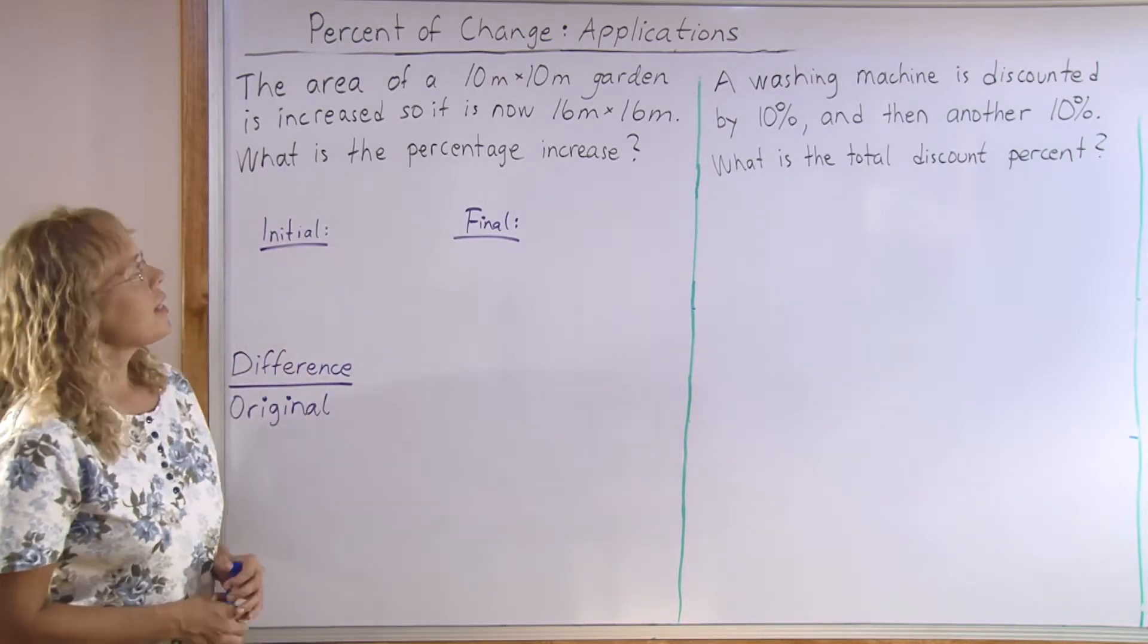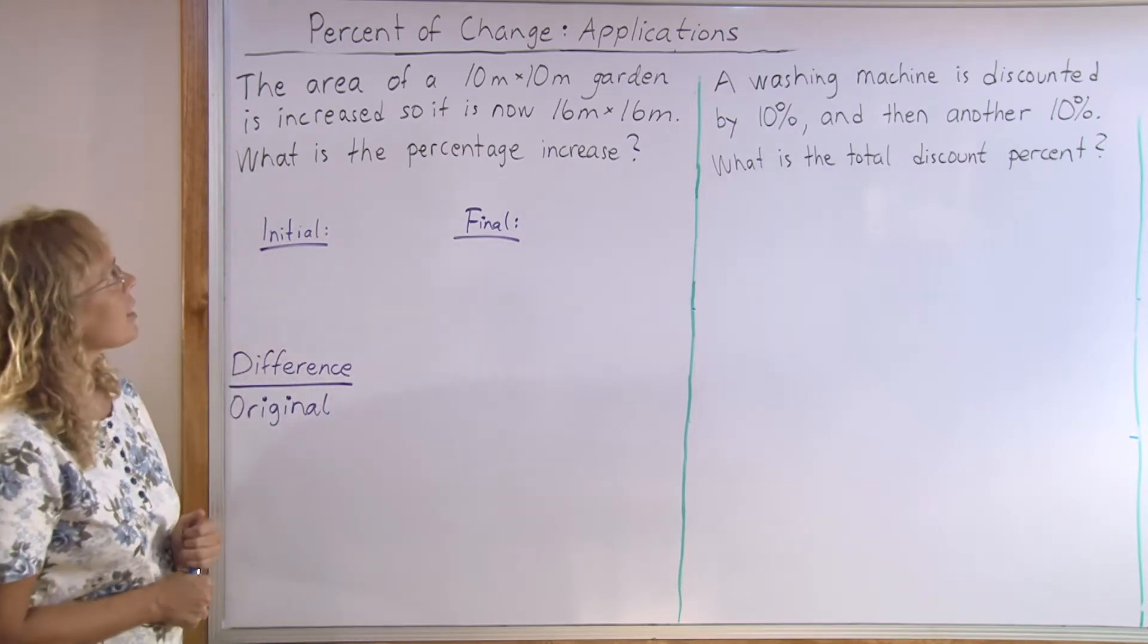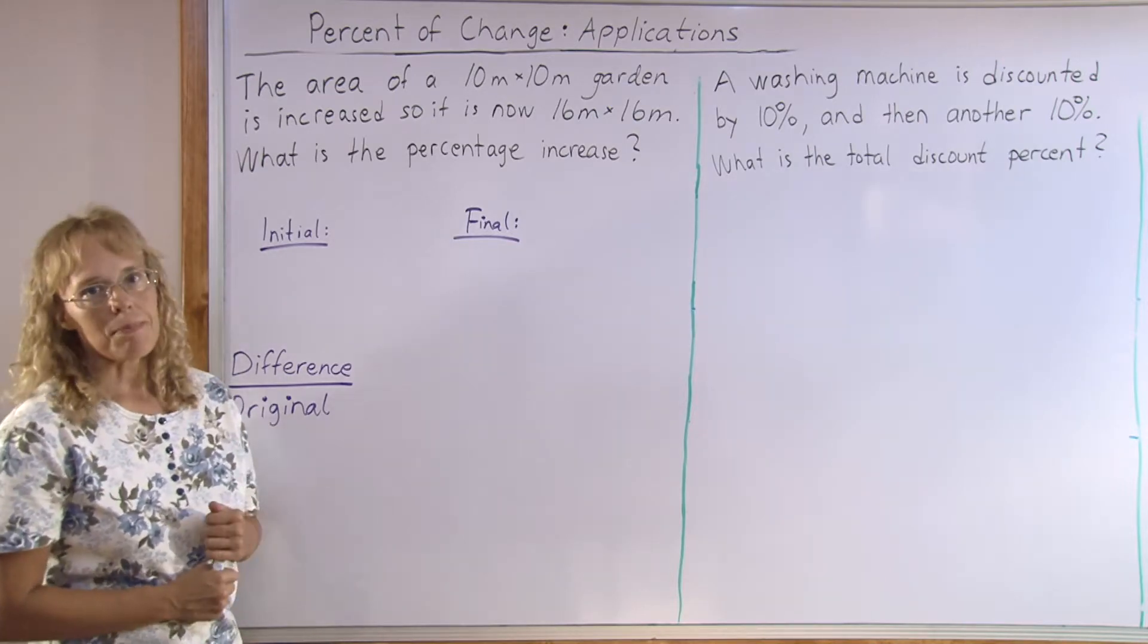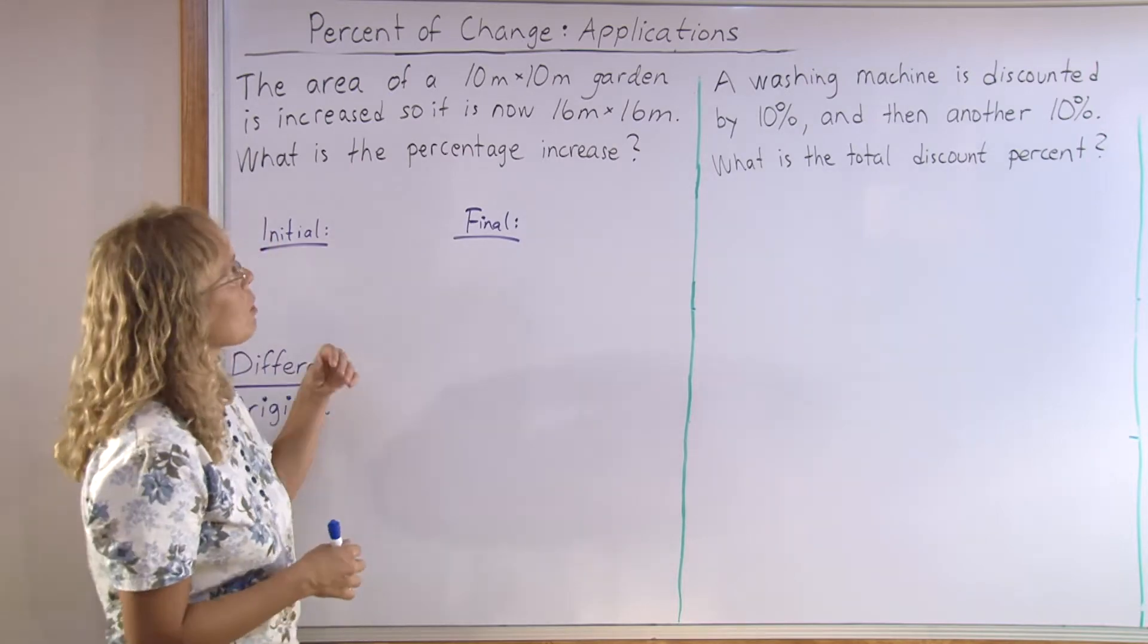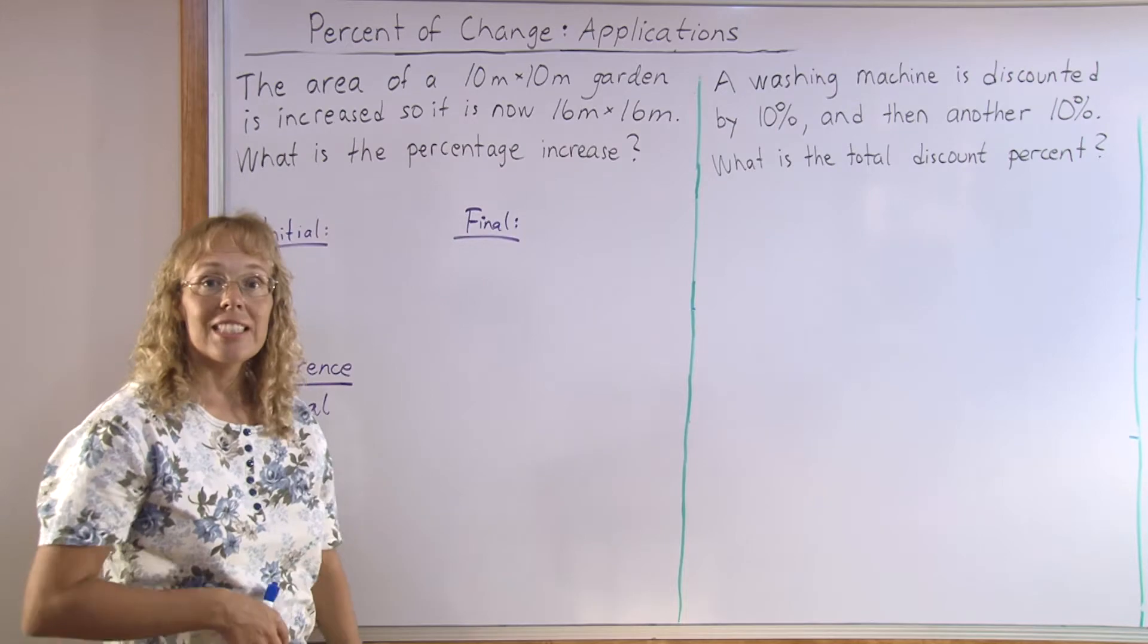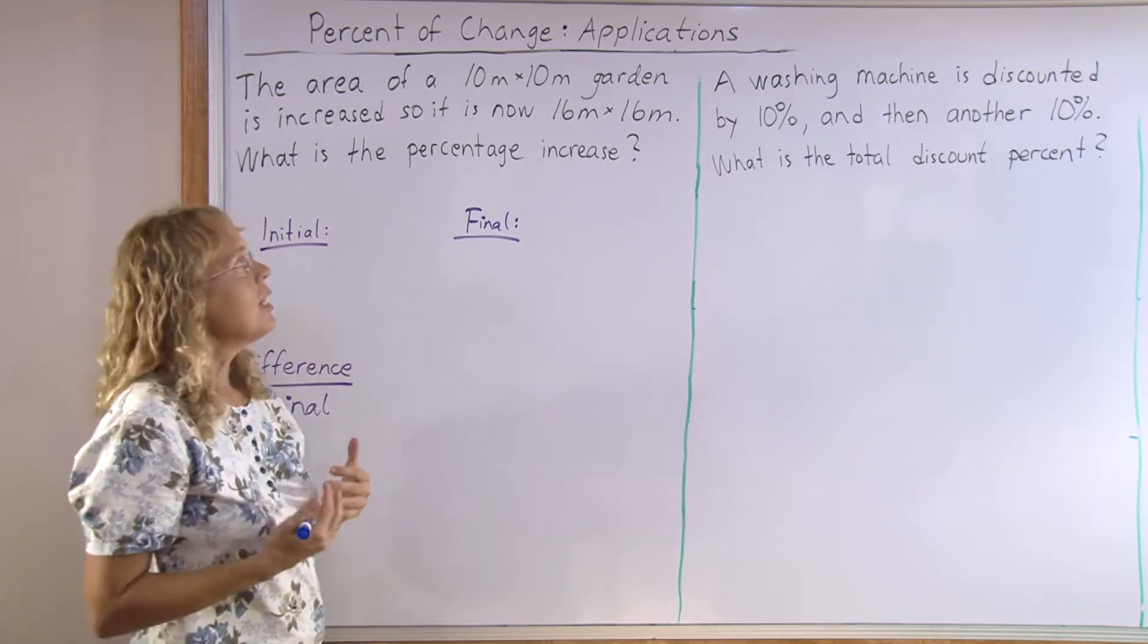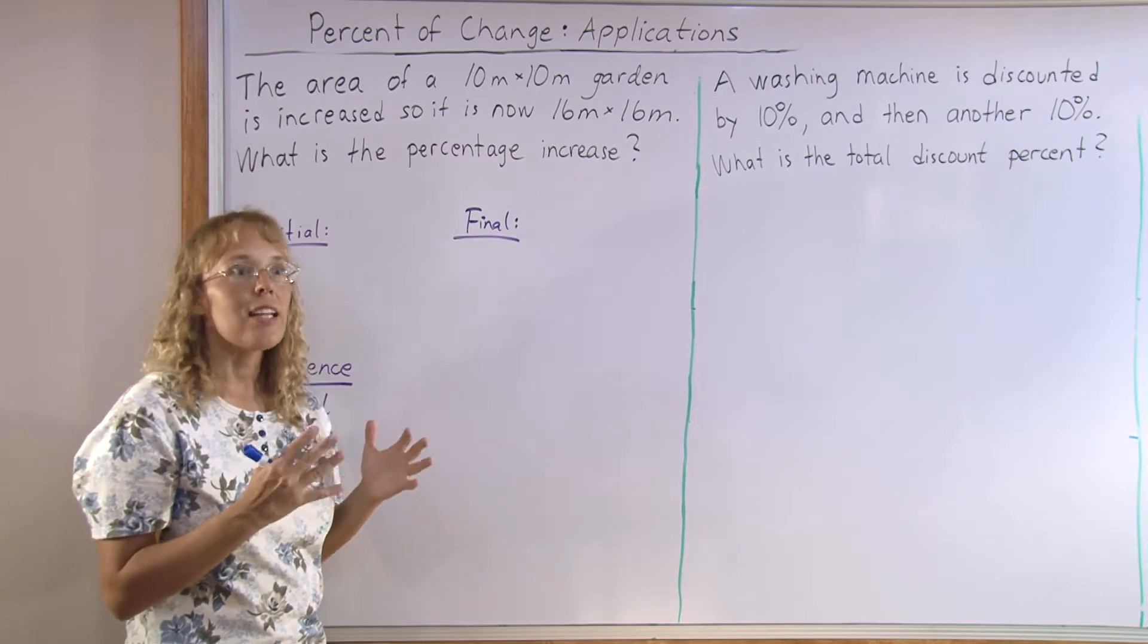First, the area of a 10m by 10m garden is increased, so it is now 16m by 16m. What is the percentage increase? Now, at first thought, maybe a person would look at these numbers 10m and 16m and think that the increase is 60%, because the difference is 6m. But that's not so, because we're going to look at the increase in area, not the increase in the side length.